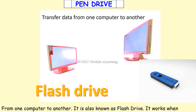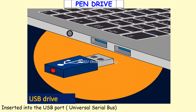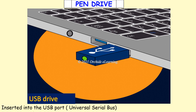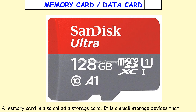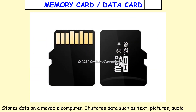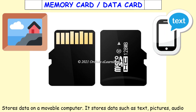A pen drive is also known as a flash drive. It works when inserted into the USB port. USB stands for Universal Serial Bus. A memory card, also called a storage card, is a small storage device that stores data on a movable computer. It stores data such as text, pictures, audio, and video.